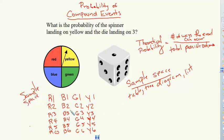So now I can easily look at my sample space and write the ratio of the number of ways the event can occur. So the spinner landing on yellow and the die rolling on three. That can happen one way to the total possible outcomes. And I see that I have one, two, three, four, five, six. There's four rows of six possible outcomes. So that means I have 24 total possible outcomes. So one over 24. So this would be the probability of this spinner landing on yellow and the die landing on three.